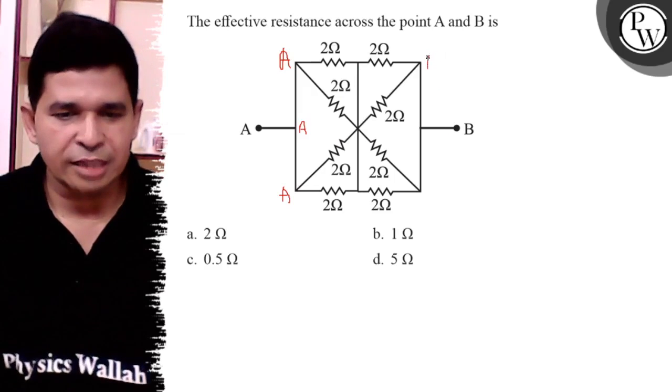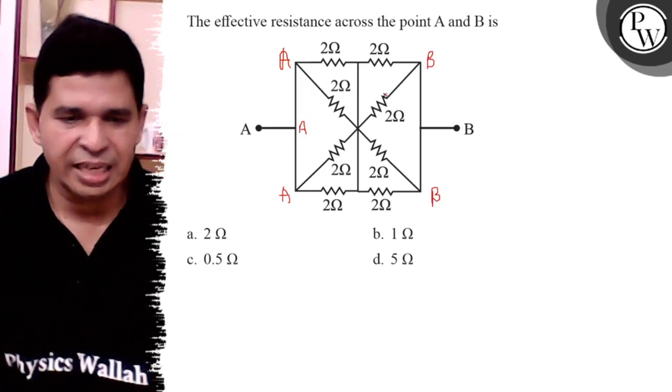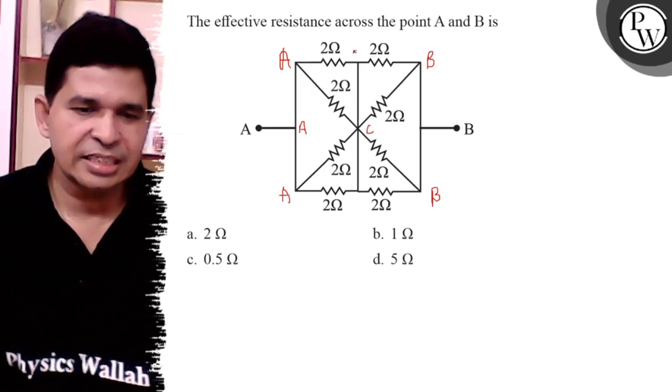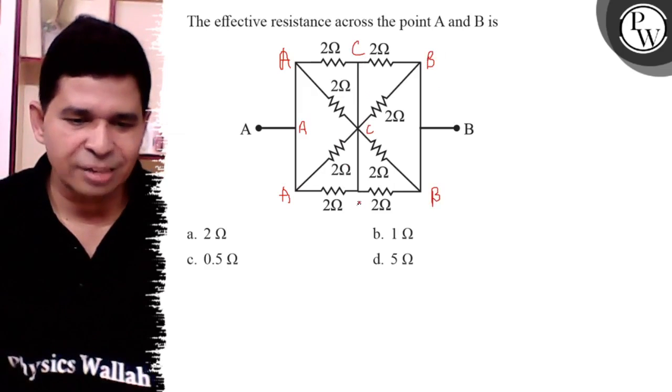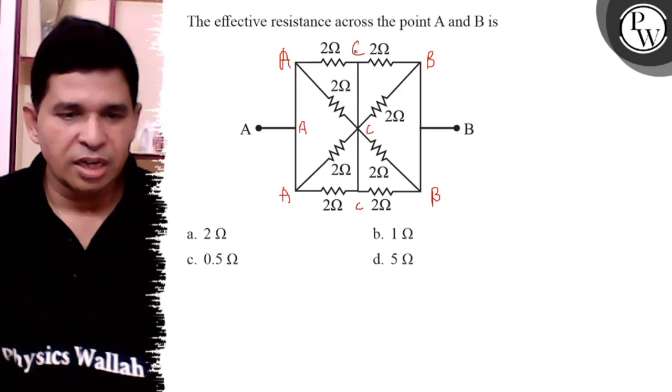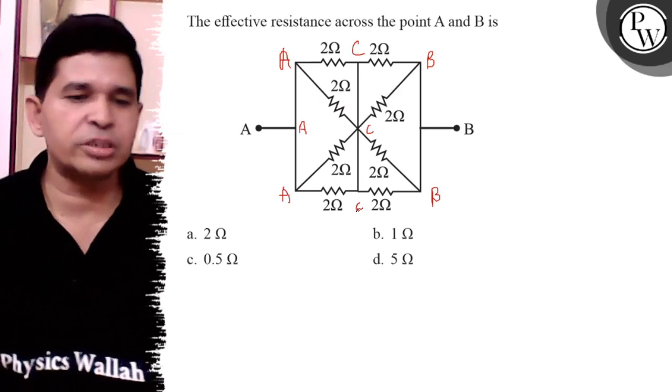It is B. It is also B, it is also B. And that point is C. It is also C, it is also C because all points are short-circuited.